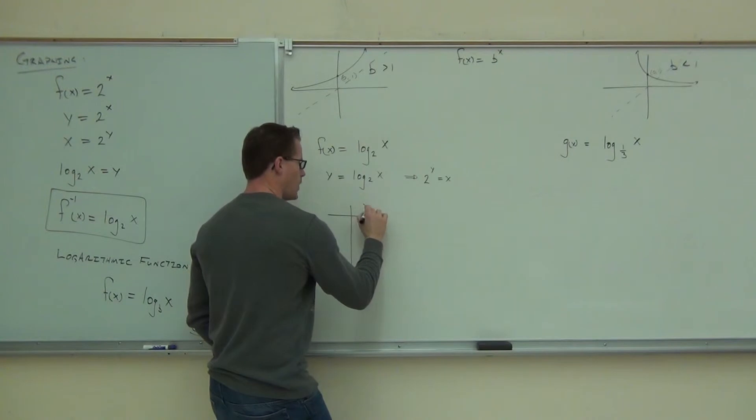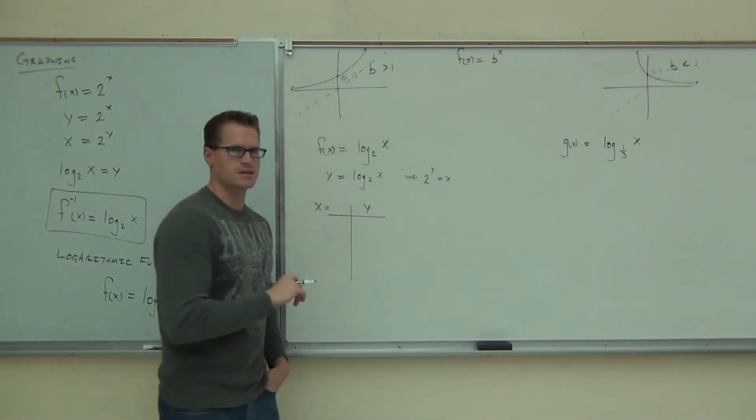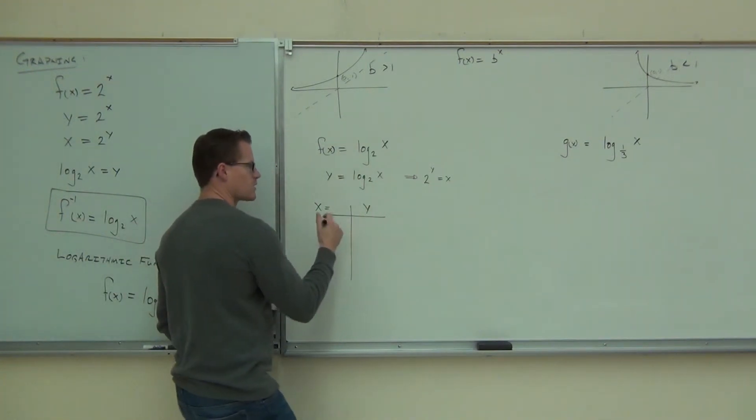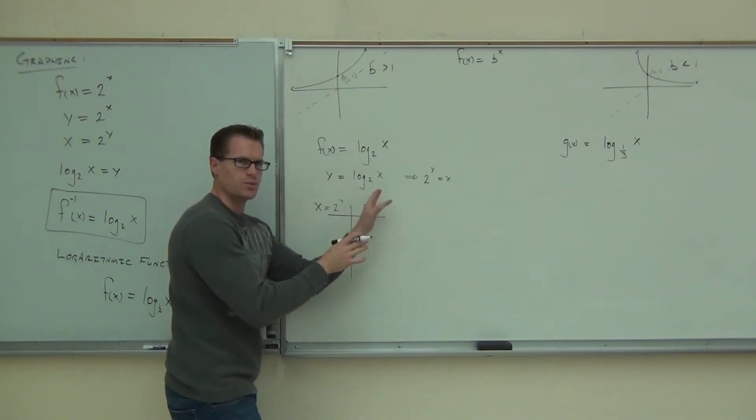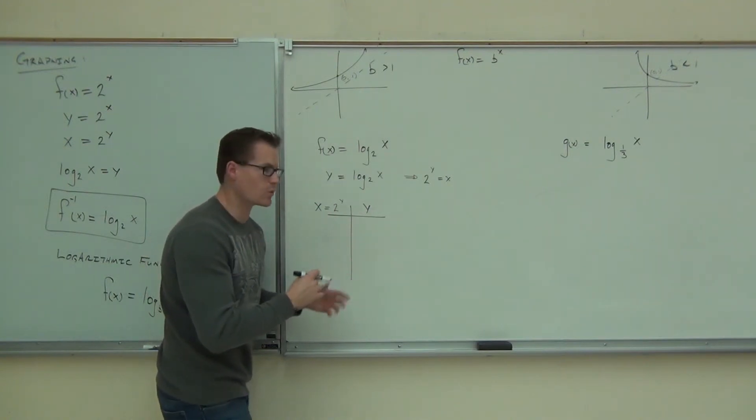So, over here, I typically have y's, and I typically have x's. But here's the deal to make these tables. You have to do them backwards, because they're inverses. We're going to have y's over here. We're going to have 2 to the y right here. Instead of plugging in x's and getting y's, because that's hard to do, we're going to plug in y's, and we're going to get x's. It's going to be backwards, which is what we normally would do.